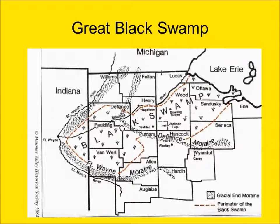At its peak, the Great Black Swamp was over 40 miles in width and 120 miles in length, and at one point the swamp once encompassed nearly 10,000 square miles in area. The Great Black Swamp proved to be a barrier to white settlement in the region, and it was not drained and settled heavily until the second half of the 19th century.